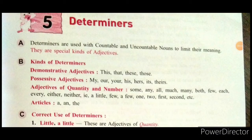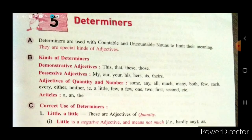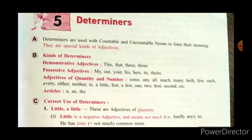Today we are going to read about Determiners. Determiners are used with countable and uncountable nouns to limit their meaning. They are special kinds of adjectives — words which add to the meaning of a noun. They are used with countable and uncountable nouns and are called Determiners.